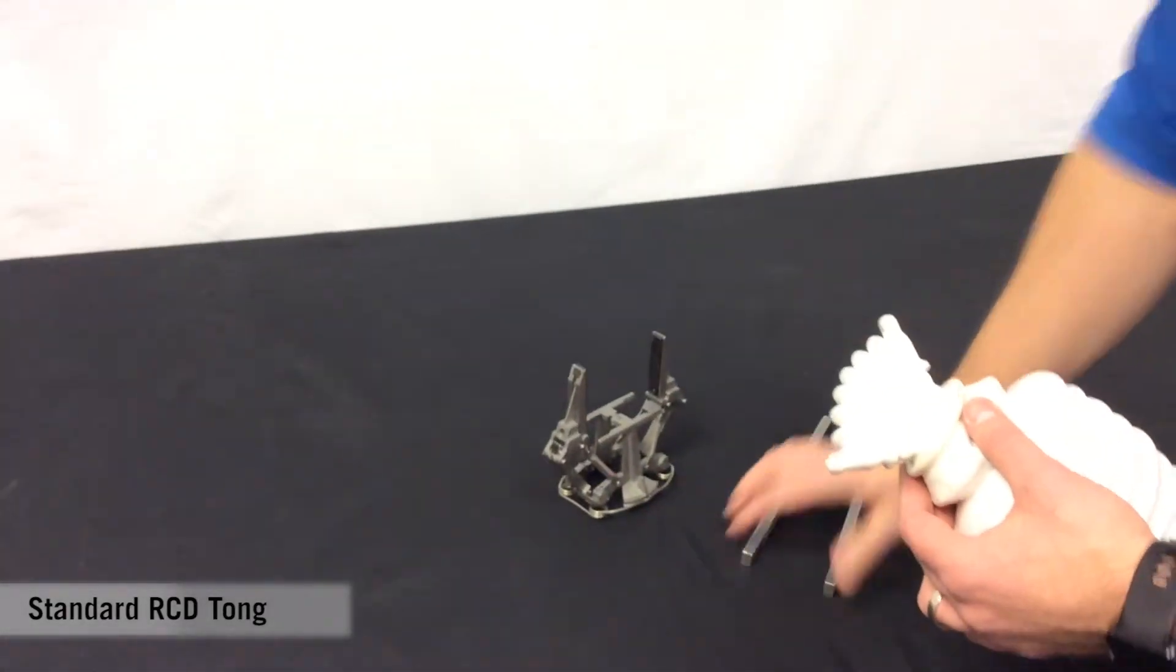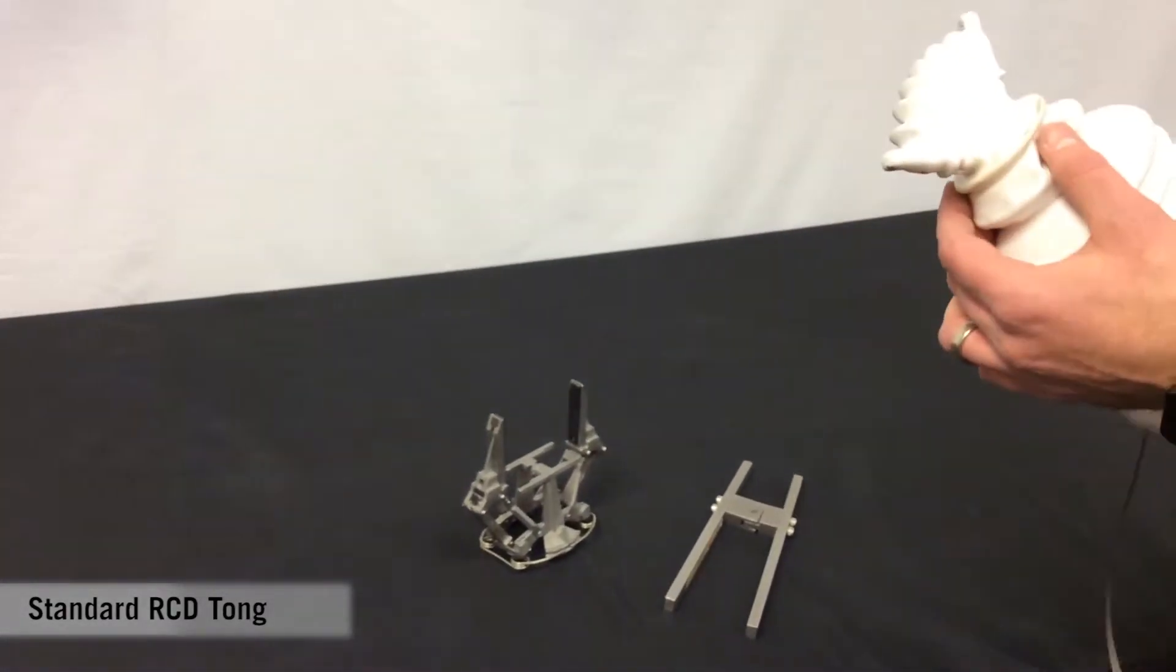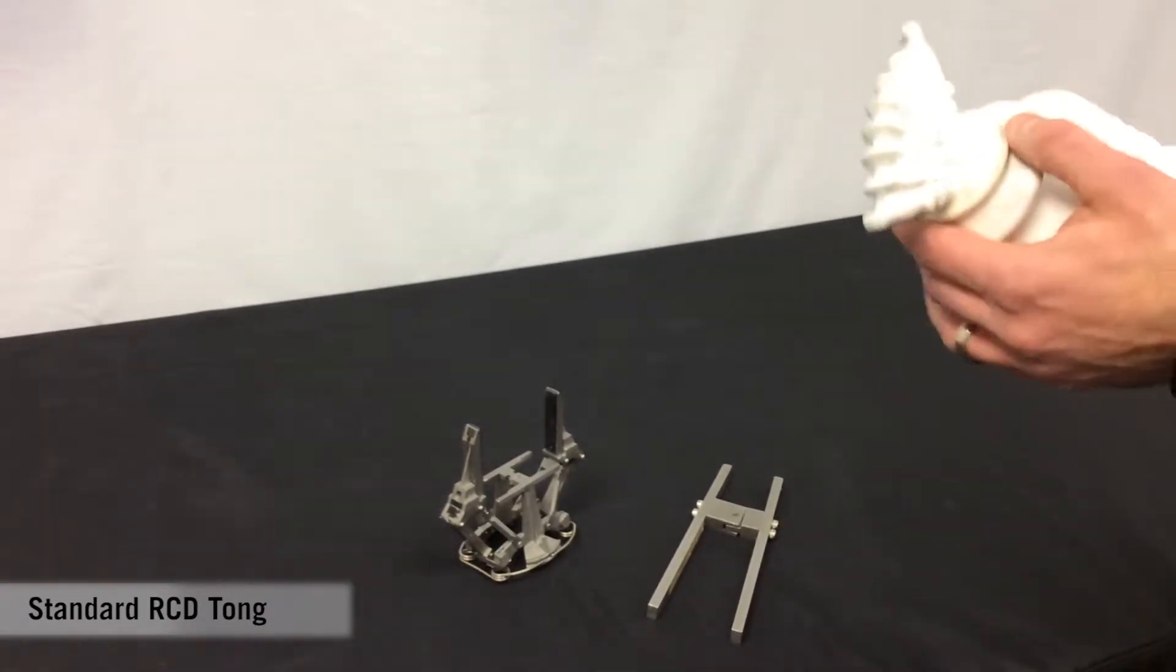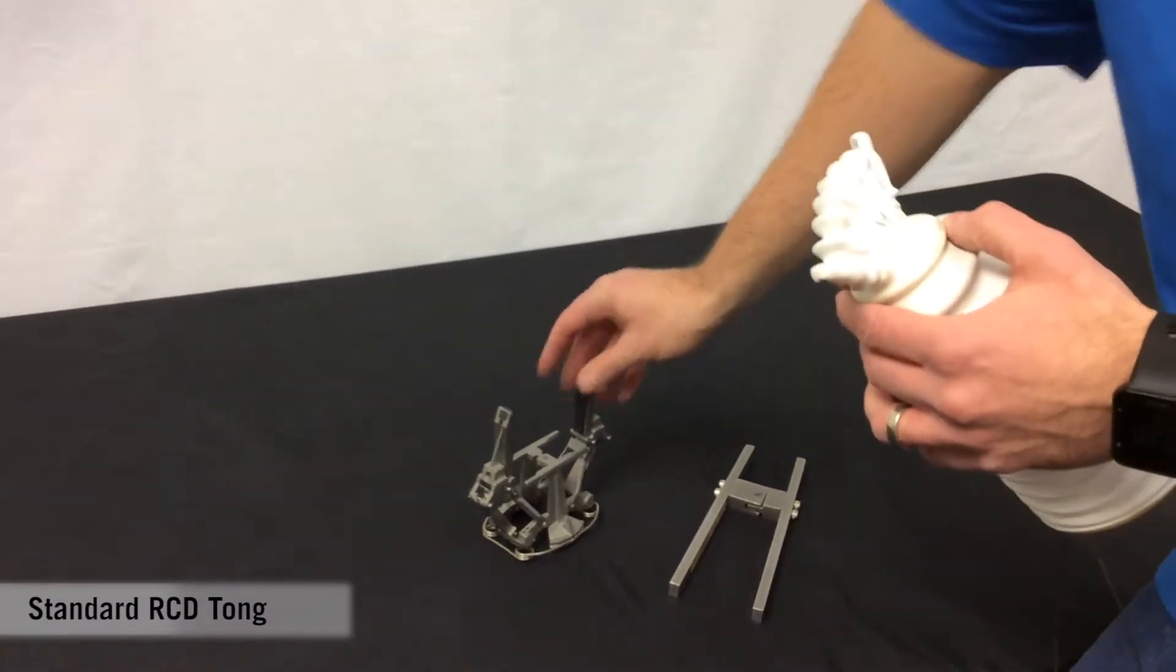So the tong would stay in the hot cell and if you're replacing the boot, then you can pull the manipulator that way. You don't need to replace the tong every time.